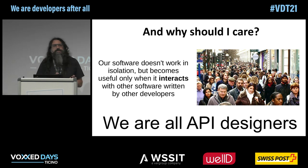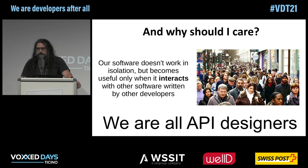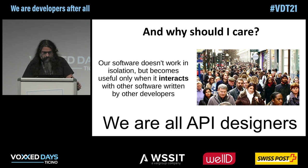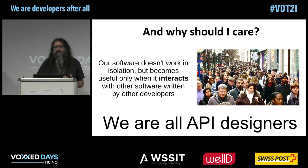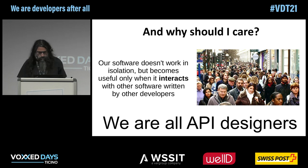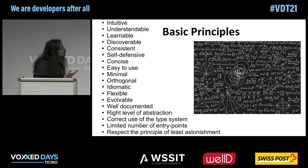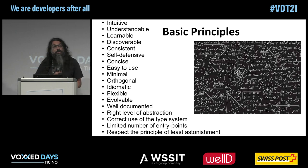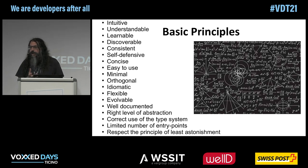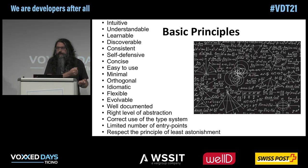We write software, software is made of components, and these components need a contract to interact with each other. So it happens quite frequently that you are also asked to design an API. The purpose of this talk is to give a few hints about how to do this in Java — though I believe some of the principles can be applied in other languages as well. These are the basic principles for me to design a good API, and sometimes they are also in contrast, so designing a good API is a balanced effort.